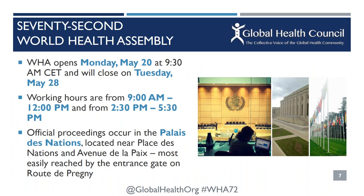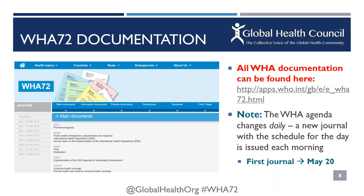Just some basic information on WHA: the World Health Assembly will open on May 20th and close on May 28th. Official proceedings take place in the Palais, with unofficial side events and meetings going on around those grounds. You can access all important WHA documentation, including the agenda we're addressing today, on WHO's WHA 72 web portal. WHO also releases a preliminary journal about a week before the Assembly, which will include any changes to the agenda, technical briefings, and official side events.